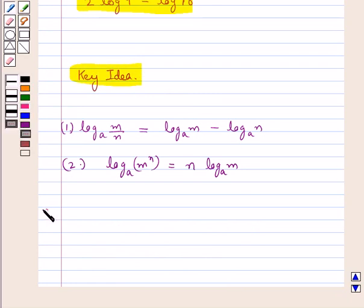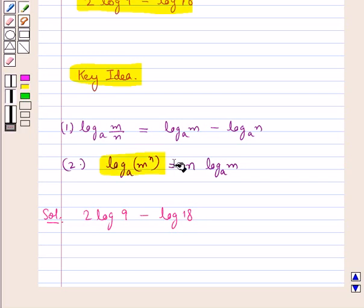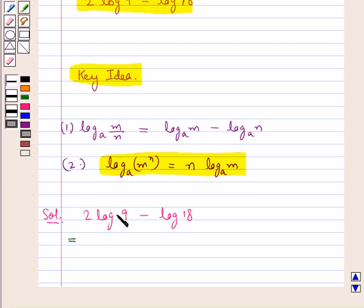Let's proceed with the solution. We need to simplify the expression 2 log 9 minus log 18. Using the second law of logarithm, we say that 2 log 9 can be written as log of 9 to the power 2 minus log 18.